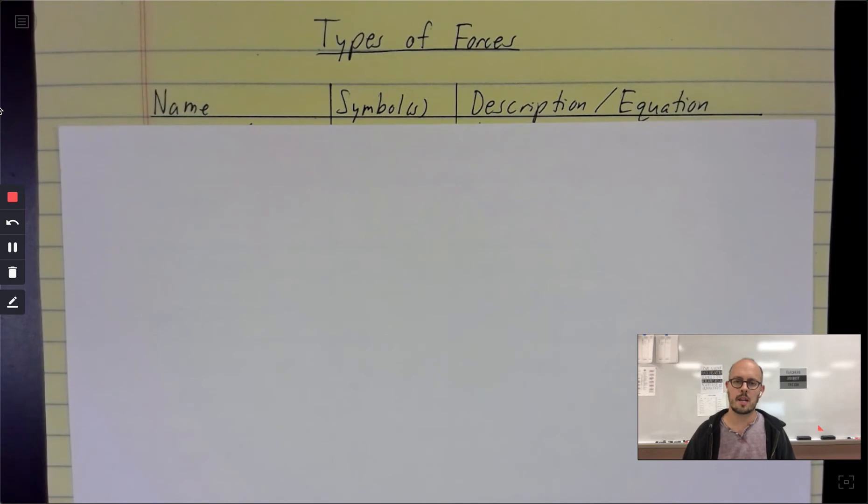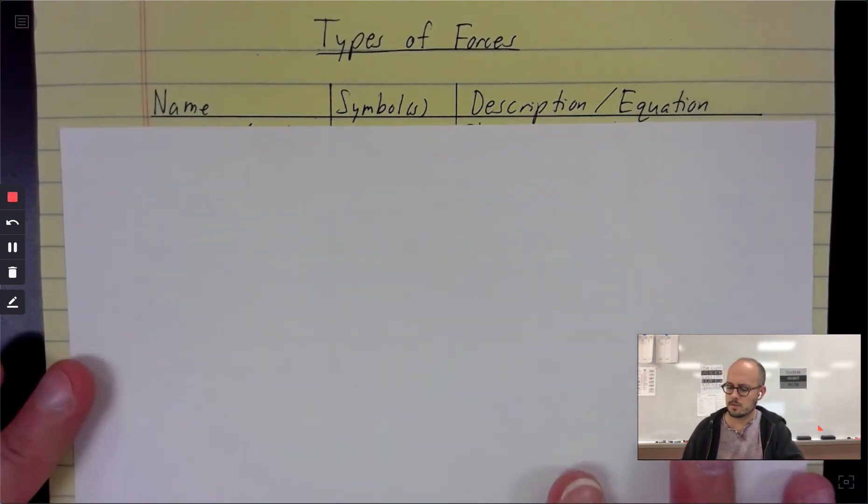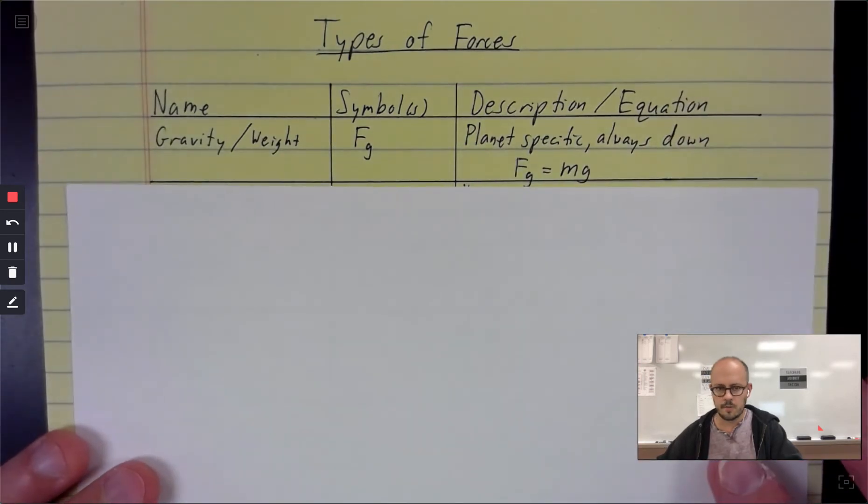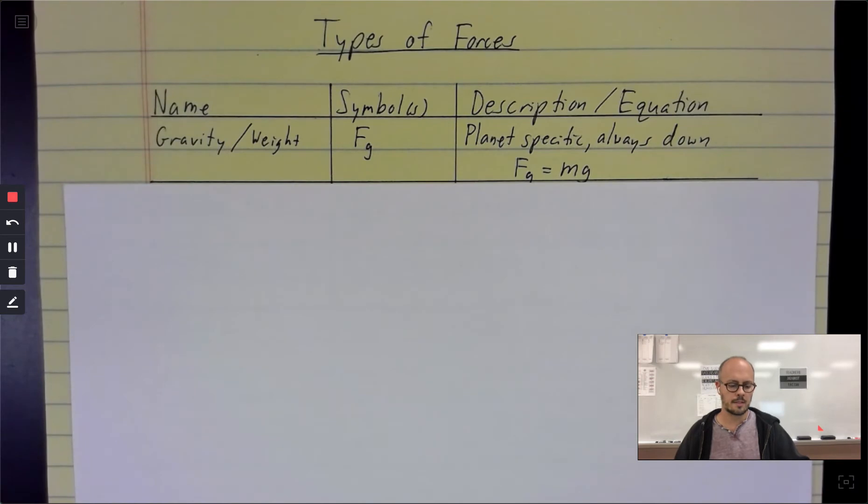So this chart is just tracking some of the more common forces that we would encounter in the AP Physics 1 universe and descriptions of those things. So the first one we have is gravity. Gravity is a force that acts anywhere in the universe. When it's acting on something on a planet, we refer to that force of gravity as an object's weight. So those are synonymous when we're talking about something on a planet.